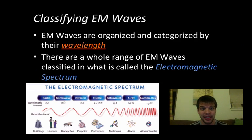As far as classifying electromagnetic waves, they're organized and categorized by their wavelength. We talked about frequency before. Now these ones are a little bit different. We classify them by wavelength. There's a whole range of electromagnetic waves that are classified on what's called the electromagnetic spectrum, which you've probably learned about a little bit before.